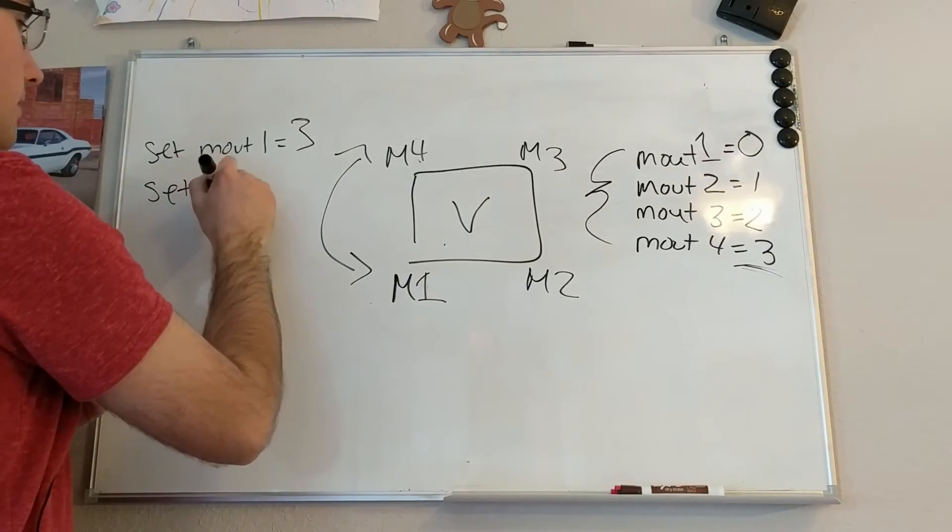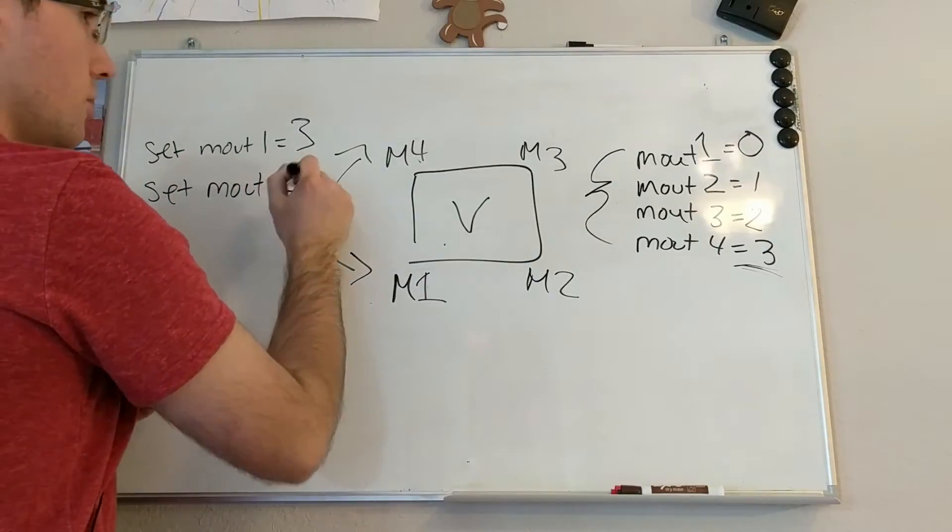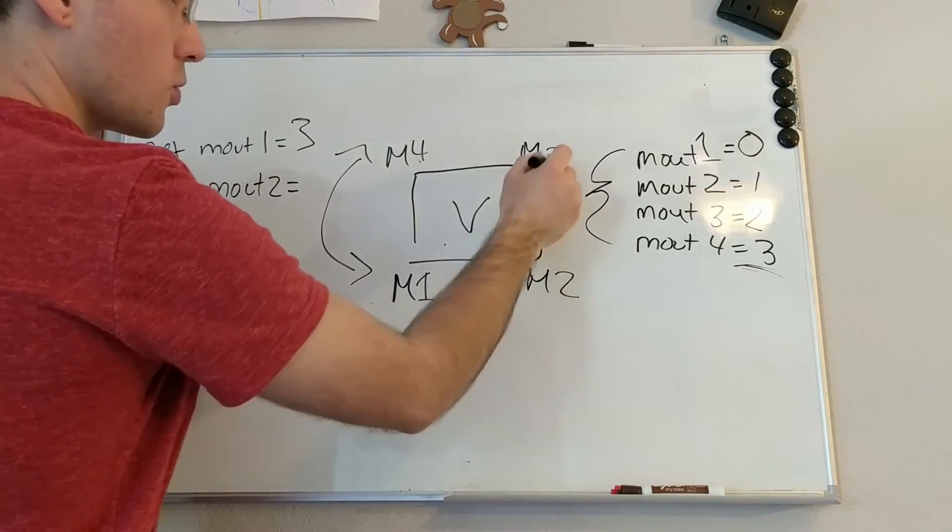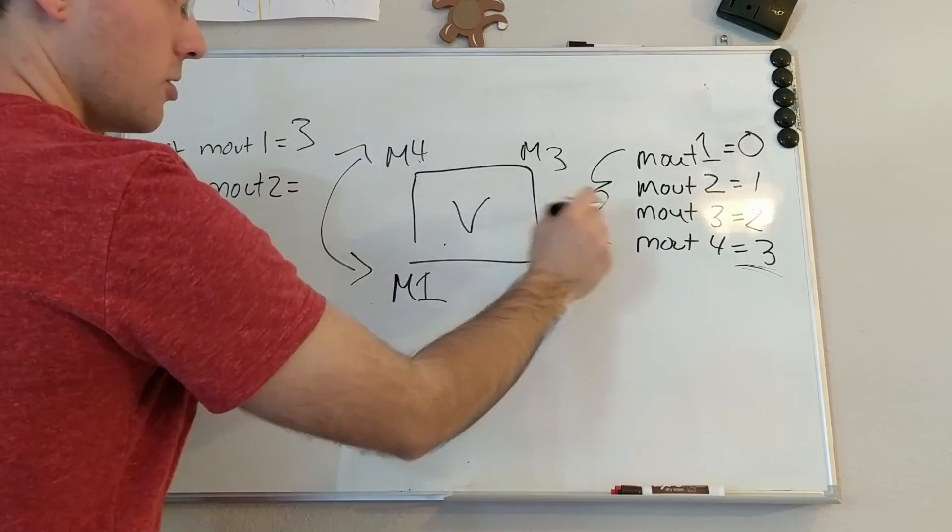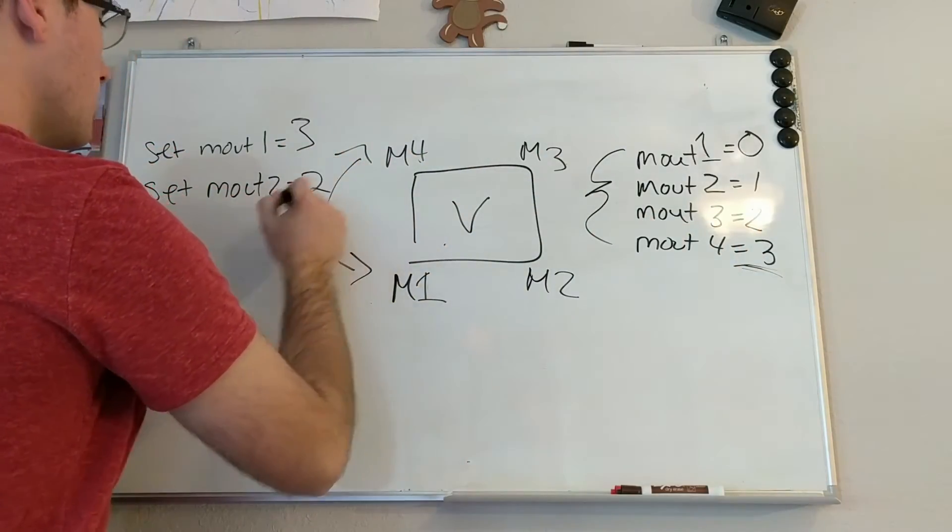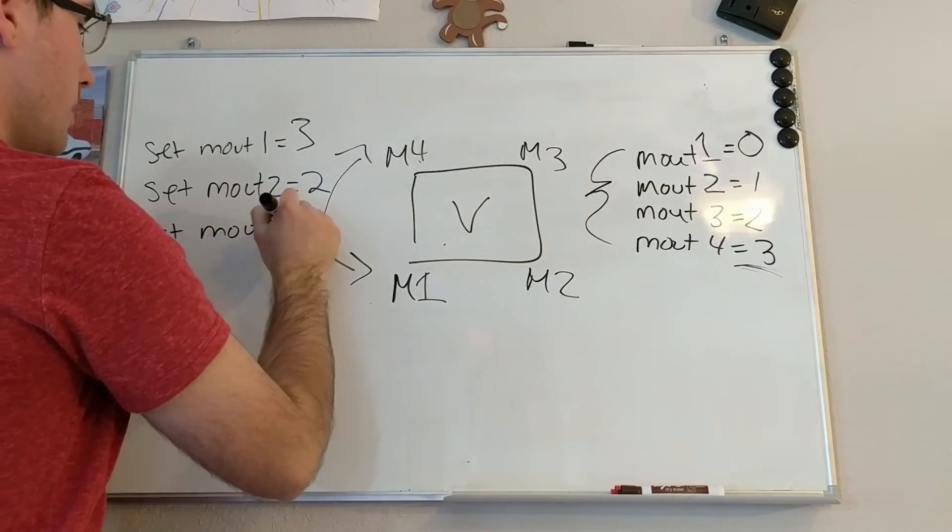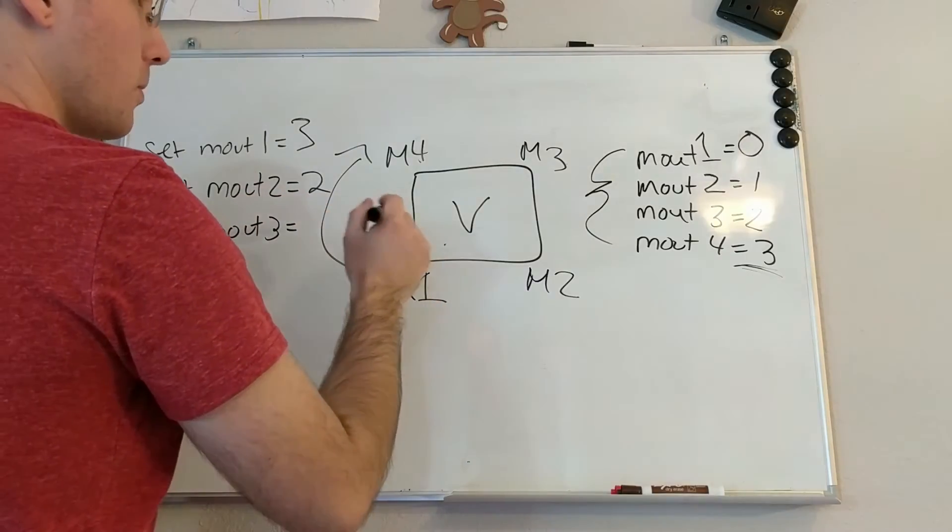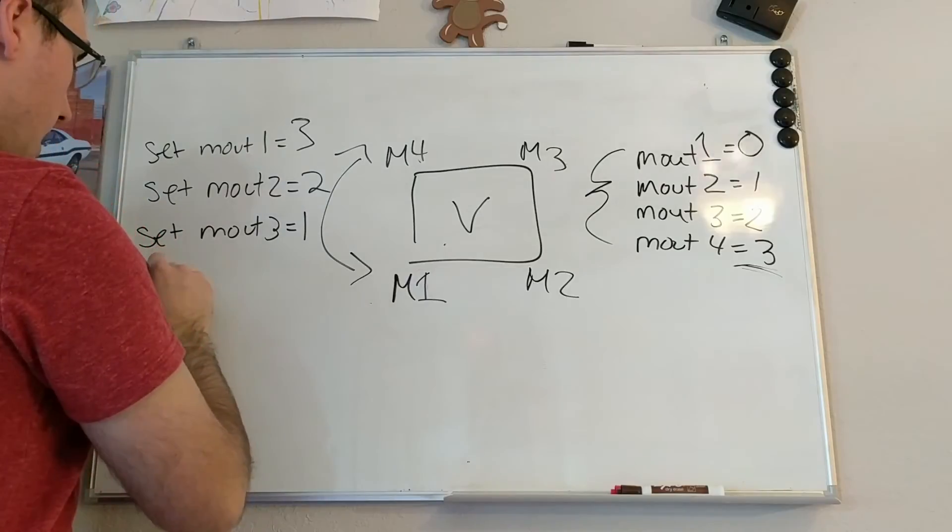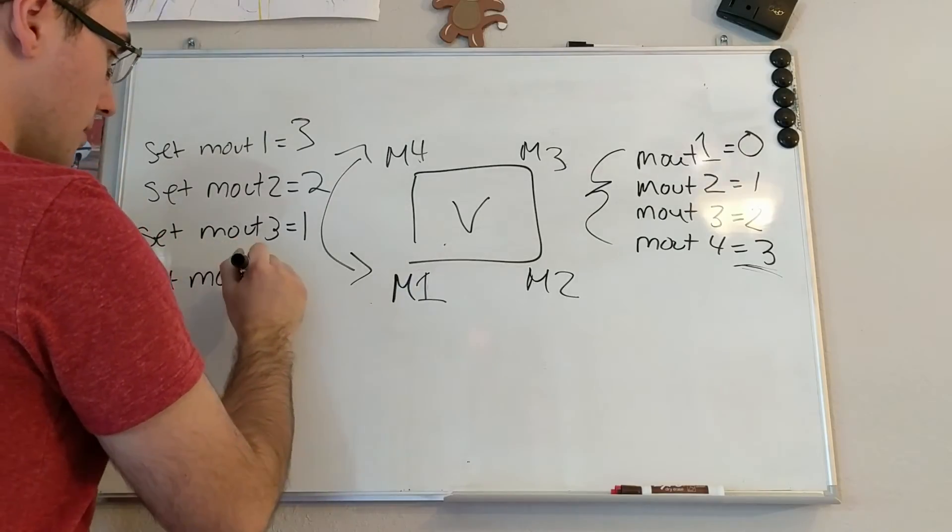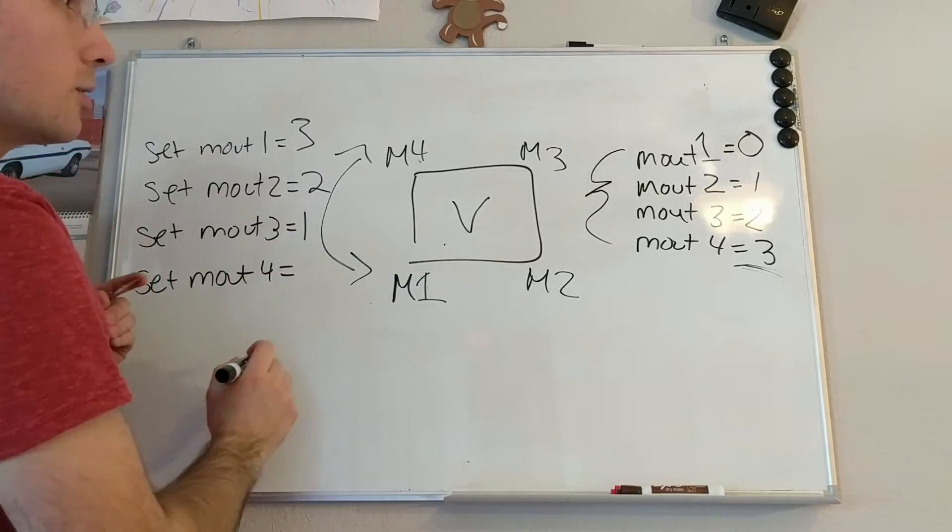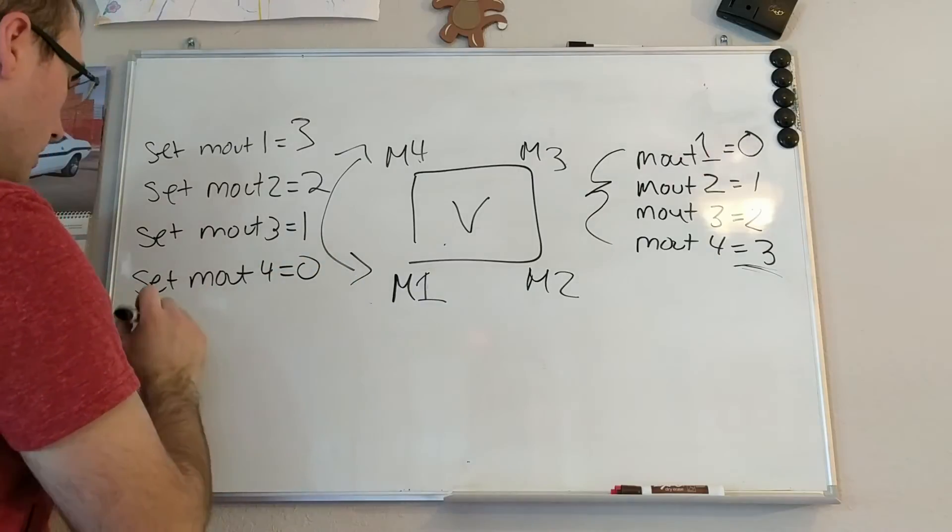Set mout 2, it's 2 swapped with 3, so 2 would now be equals 2. Set mout 3 equals 1. Set mout 4 equals 0. Save.